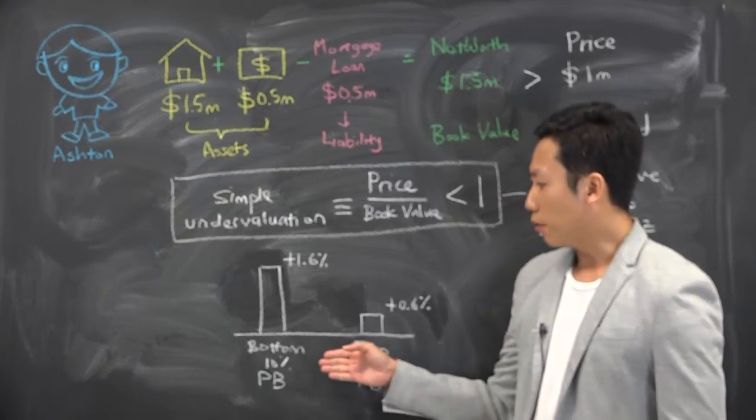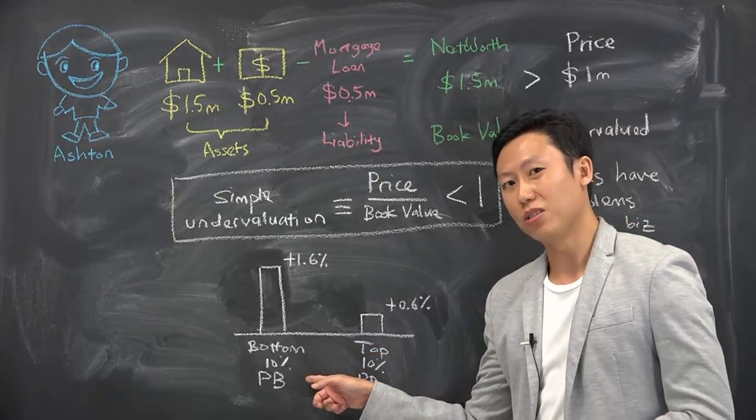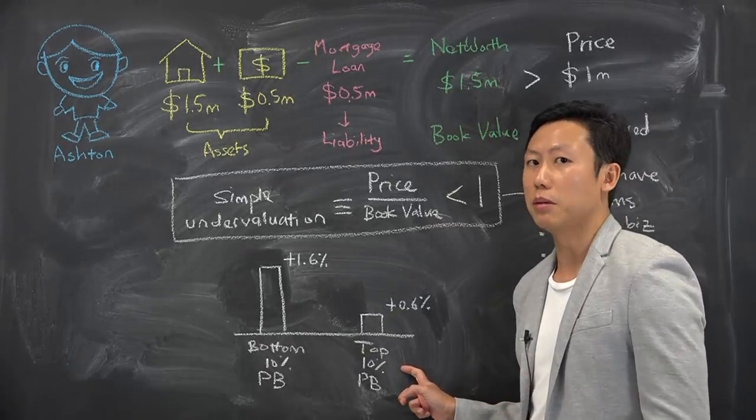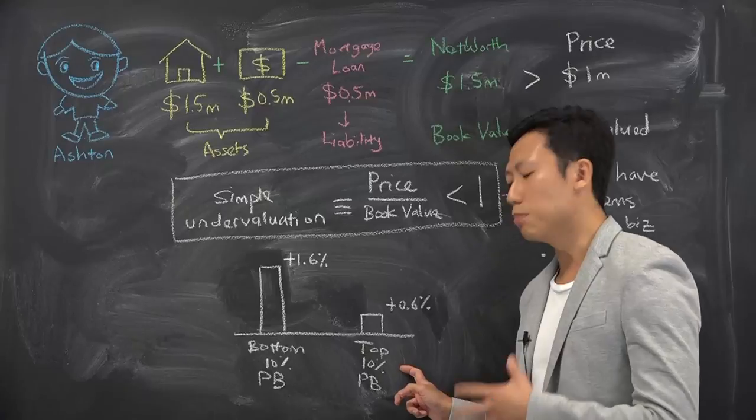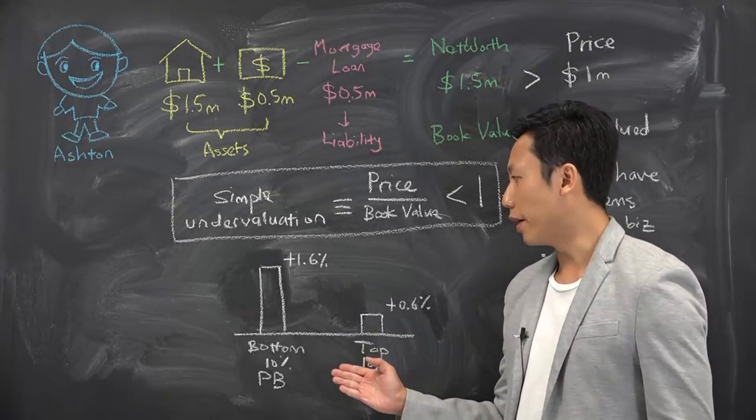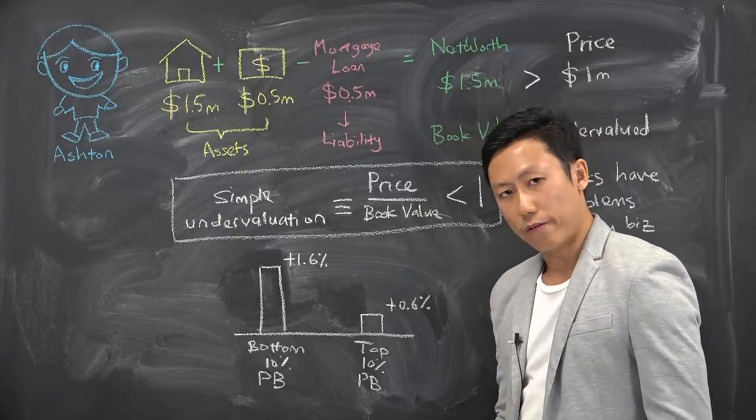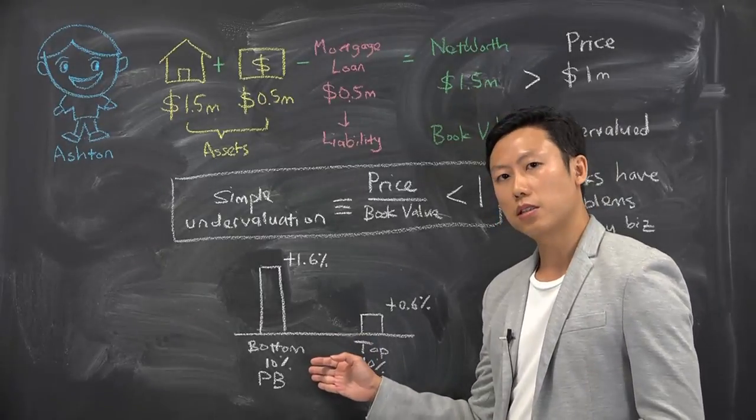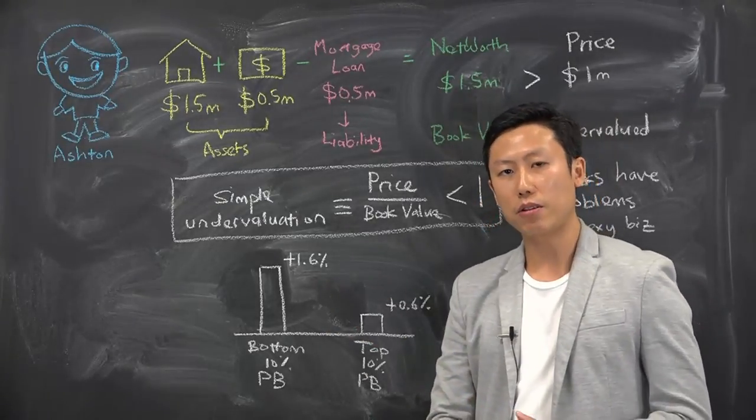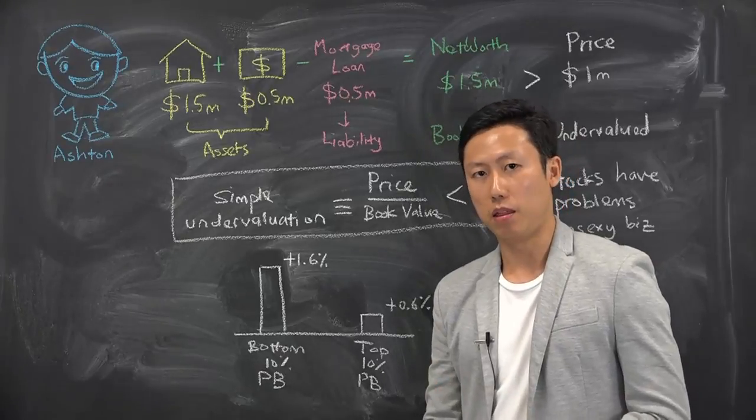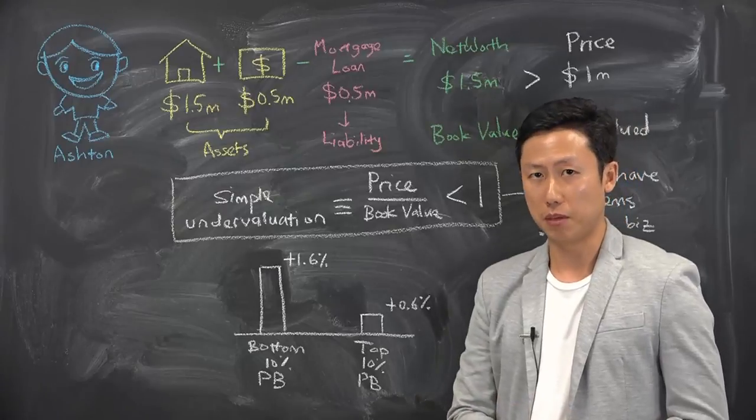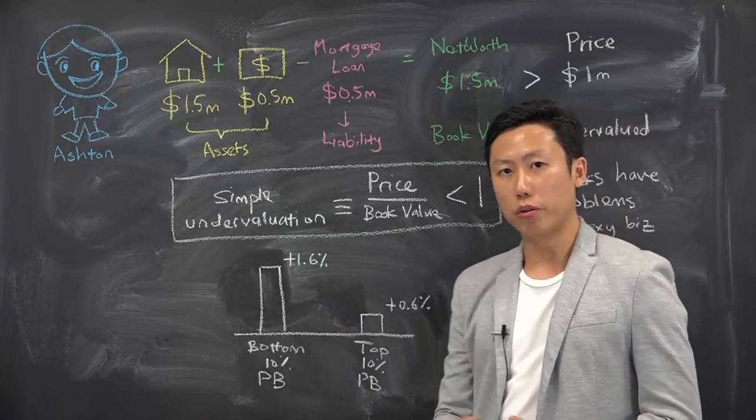For example, one study showed the bottom 10% price to book ratio, your cheapest 10%, versus the top 10% by price to book ratio, your most expensive stocks. When they compared the returns over several years, they found that on average, if you have bought the cheapest stocks by the lowest price to book ratio, you gain 1.6% returns per month as compared to if you have bought the most expensive, you only gain 0.6% per month. It's almost three times more returns if you have bought the cheapest stock by the price to book ratio.